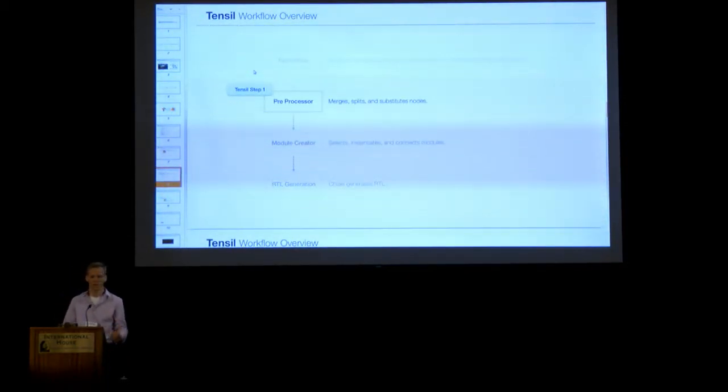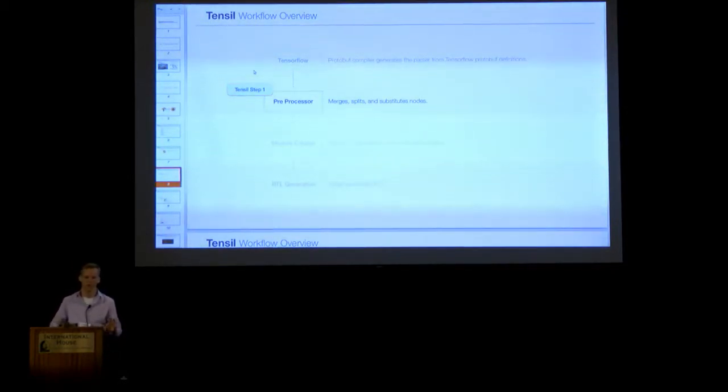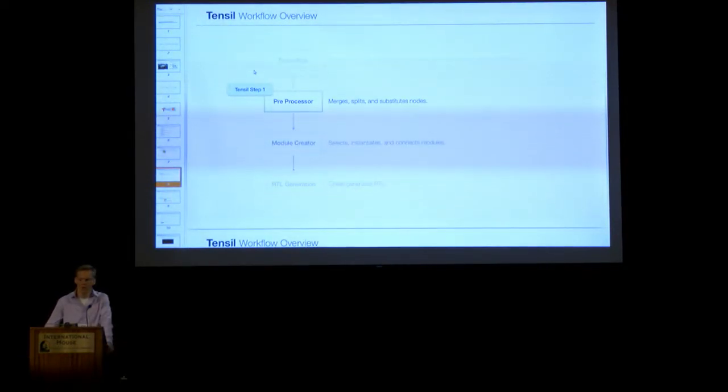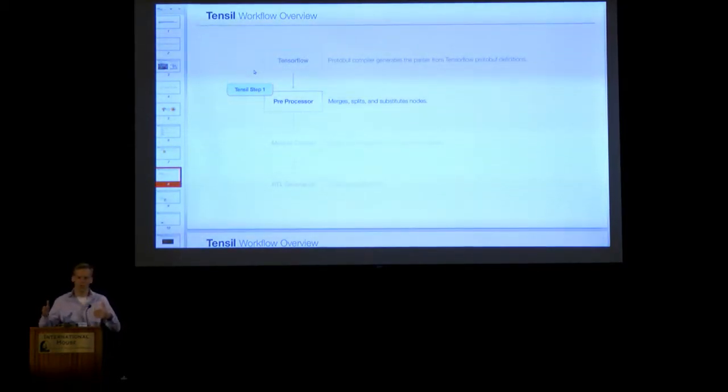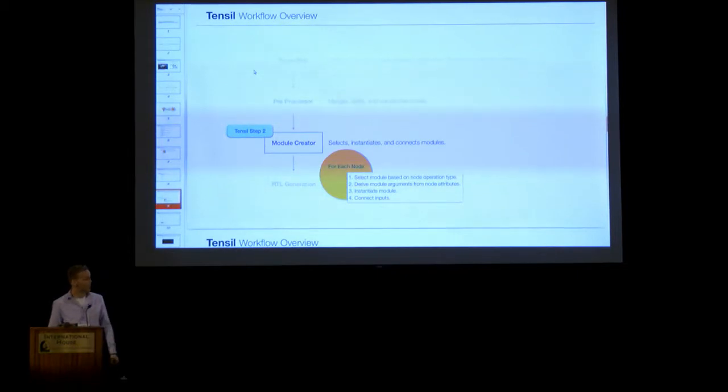Given that graph description, Tencil will first run a preprocessor step over the graph to try and groom the graph to make it more amenable to RTL generation. One example of this is, in TensorFlow, the flatten operation, which essentially unrolls a matrix into a big, long vector, is implemented in a bunch of small operations. But it's actually really easy to just implement that in hardware in one kind of step. So the preprocessor will merge those, that string of operations together.